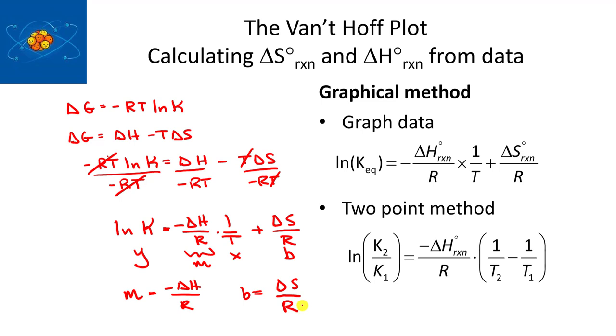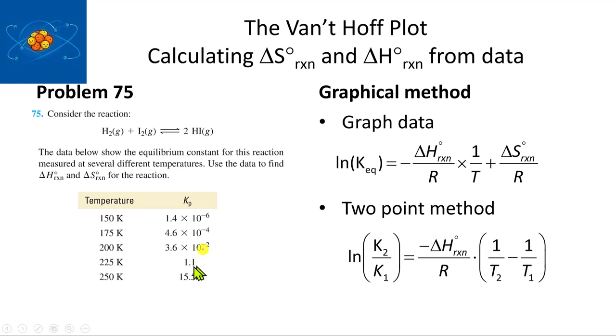That's one way to do it. The other way to do it is actually to use this equation, and this is known as the two-point Van't Hoff equation. But let me show you really quickly how this works with the graph first. Consider the reaction - they give you the data for temperature and Kp, and they want delta H and delta S for the reaction.